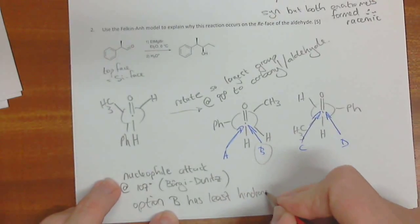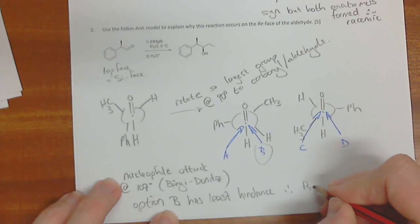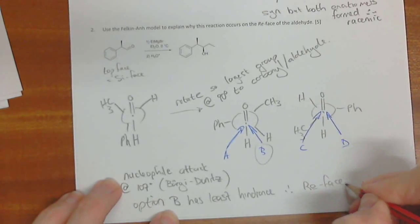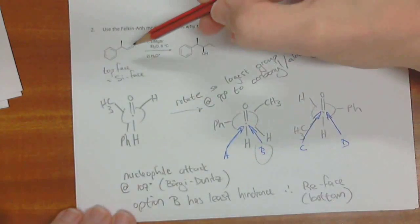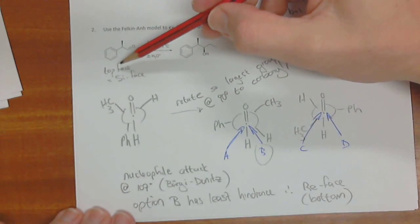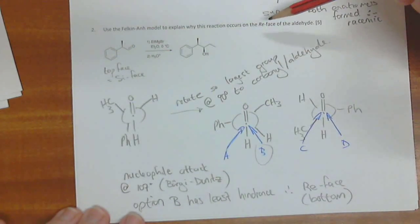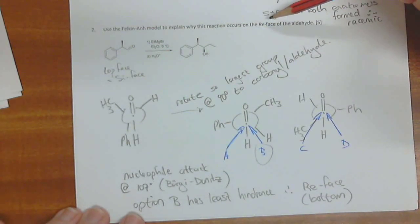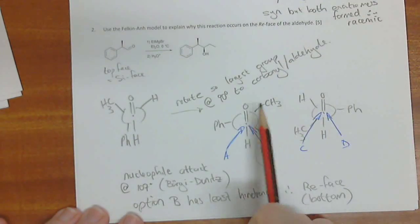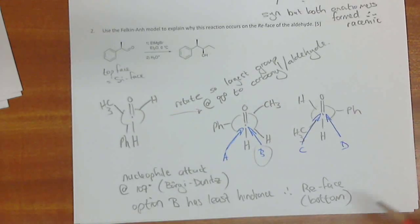This is the Burgi-Dunitz angles of attack. A, B, C, and D. And we need to write that there somewhere and just say, nucleophile attacks at 107 degrees. And we can write there, Burgi-Dunitz. And we can write there, option B has least hindrance, therefore re-face. Okay, that's the bottom. Okay, so we've identified here that the si face is the top face. So therefore the bottom face must be the re-face.